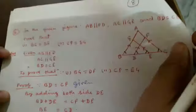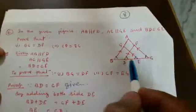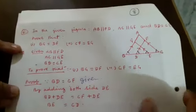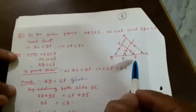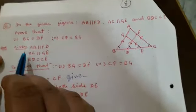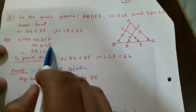Next question: In the given figure, AB is parallel to FD, AC is parallel to GE, and BD is equal to CE. We have to prove two things: first, BG is equal to DF; and second, CF is equal to EG. Given: AB parallel to FD, AC parallel to GE, and BD is equal to CE.